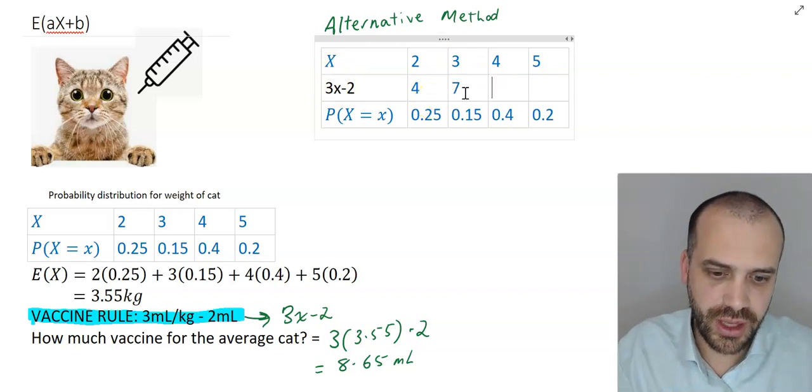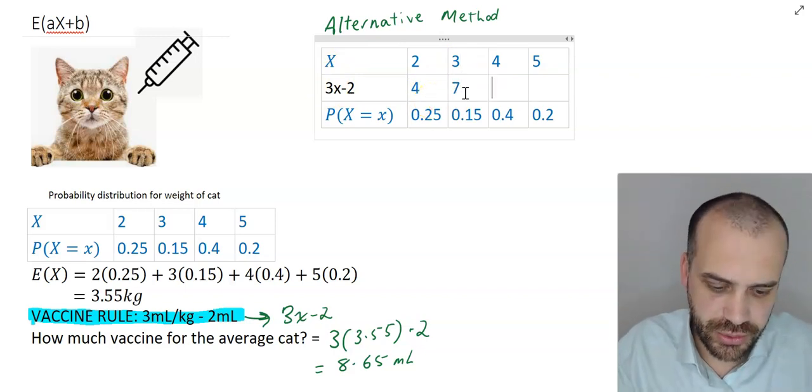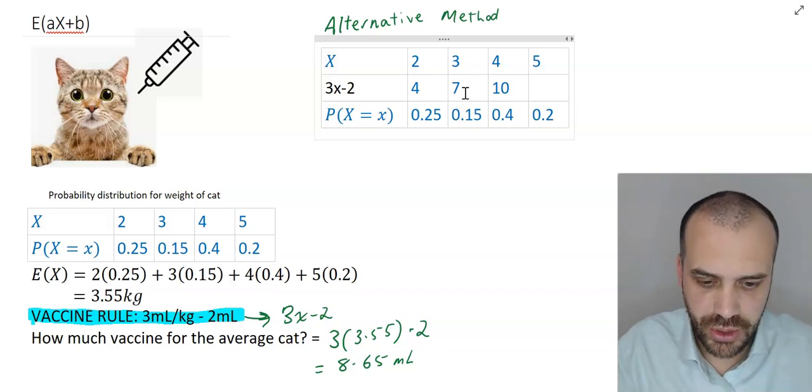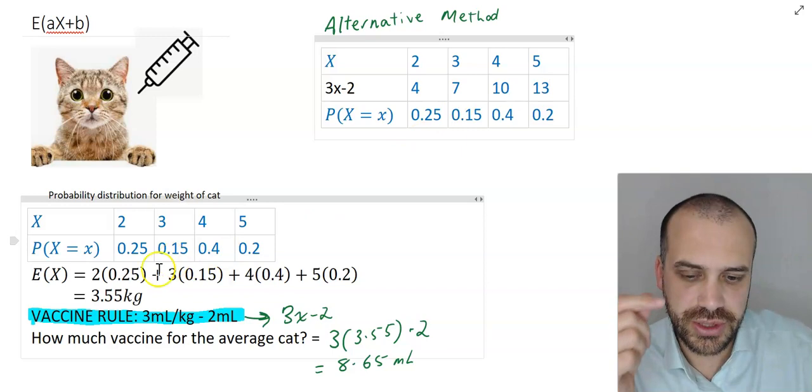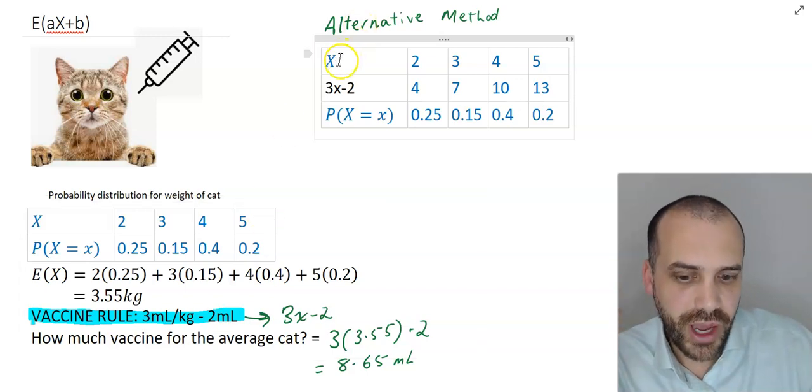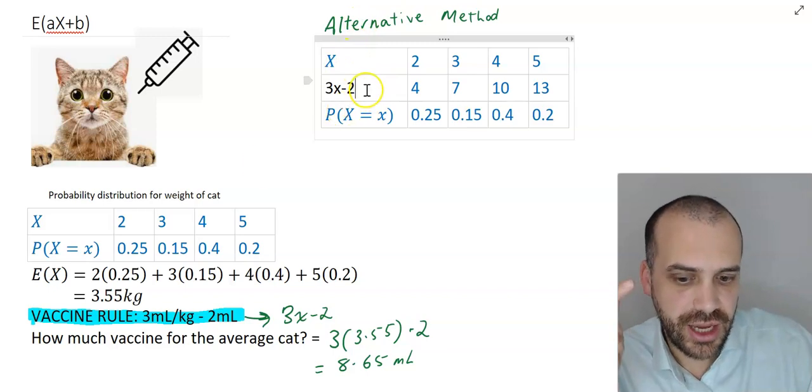A 4 kilogram cat would receive 10 mils of the vaccine, and a 5 kilogram cat would receive 13 mils of the vaccine. Now what I'm going to do is calculate the expected value, not of the weight of the cat, but the expected value of the vaccine that the cat receives.